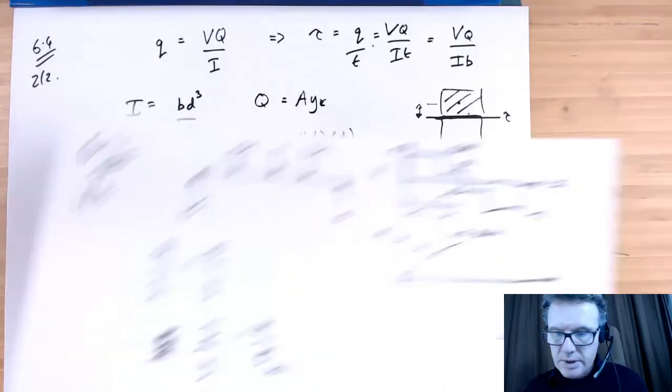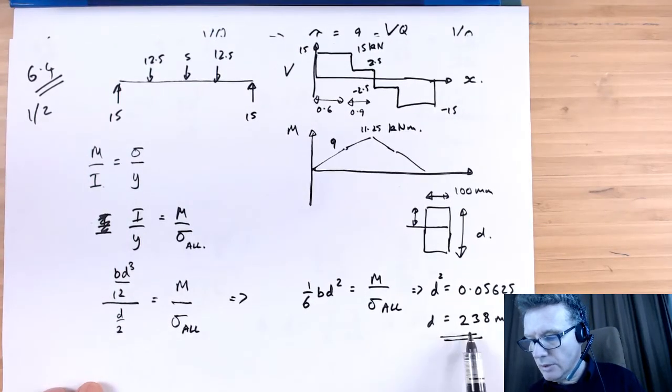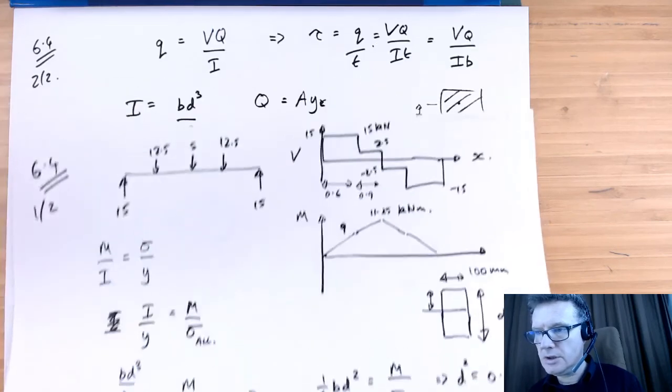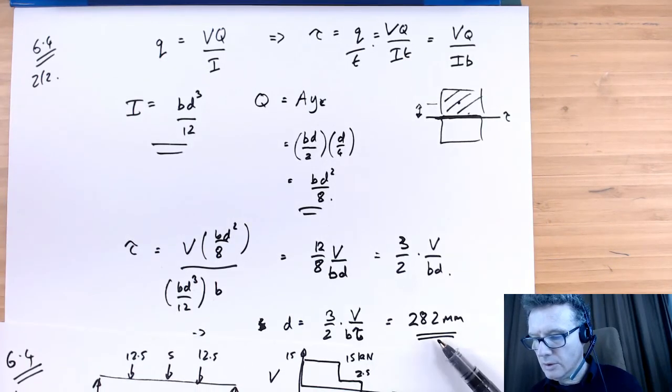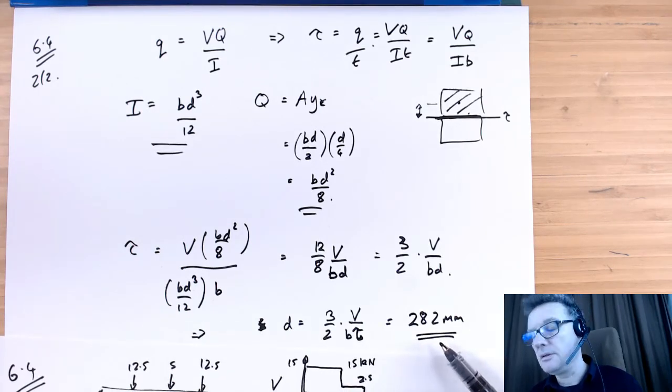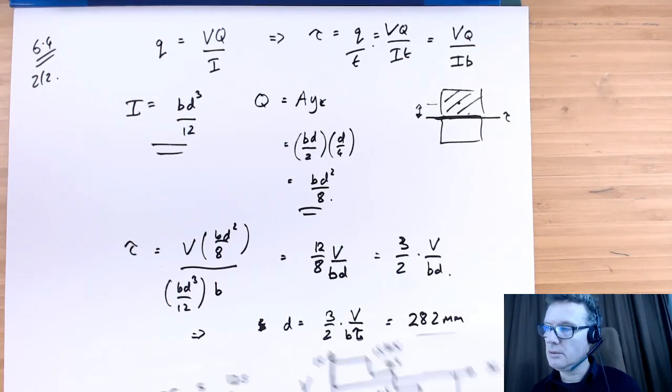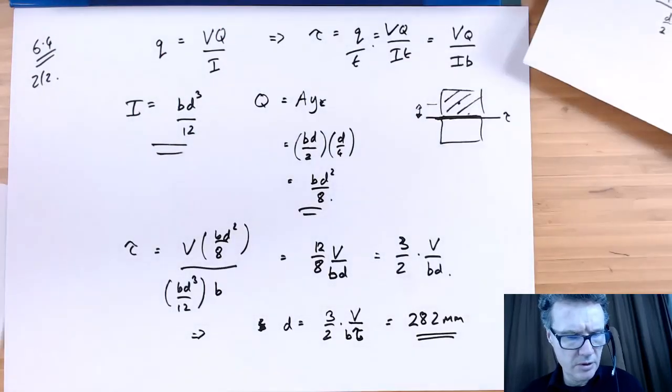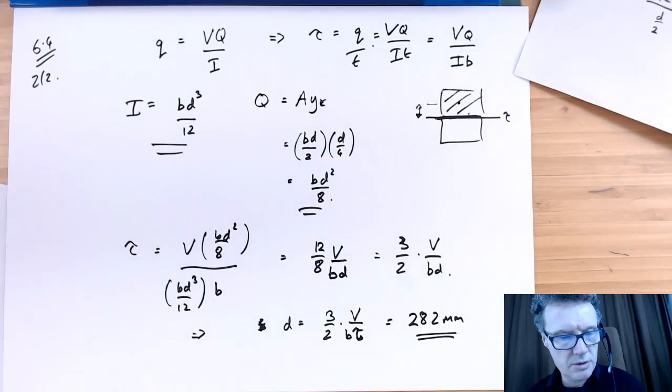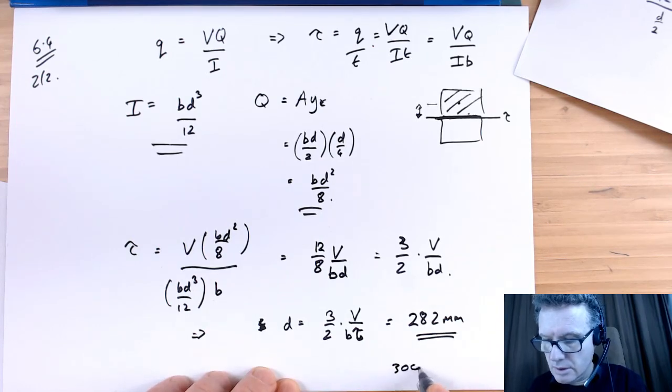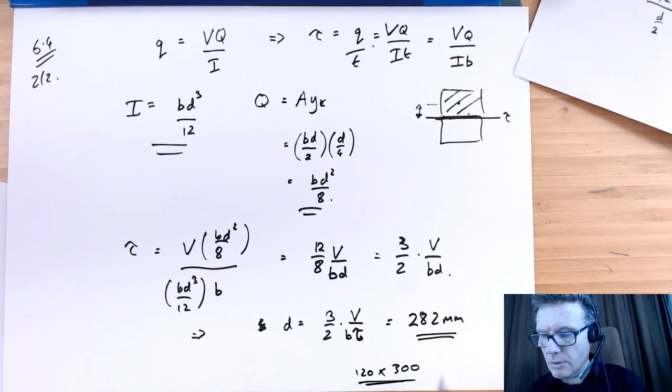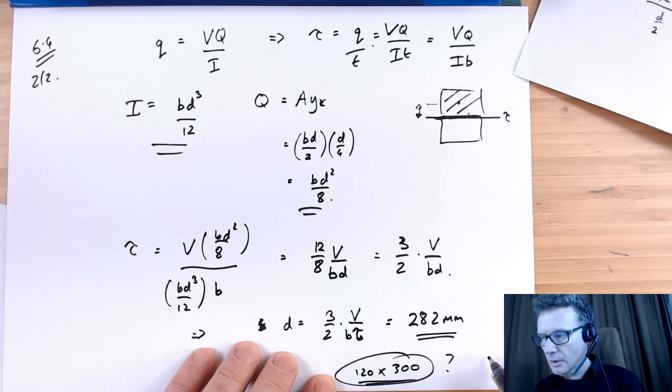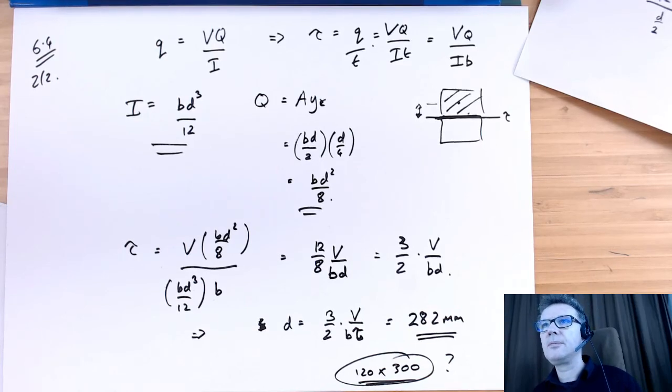Now we can compare the answers. If we were just doing an analysis based on bending, we'd want wood that's about 240 millimeters in depth. But from the shear analysis, we need 282 millimeters. You'd probably go to the timber merchant and buy 300 millimeter depth. So you'd probably want to use 300 by 120 millimeters. That's probably what I'd be purchasing. Okay, that one's done.